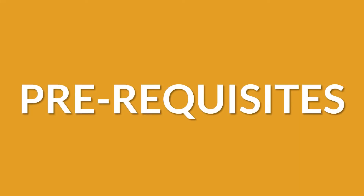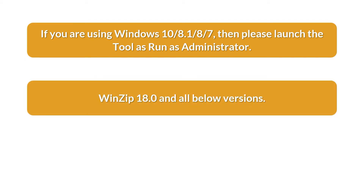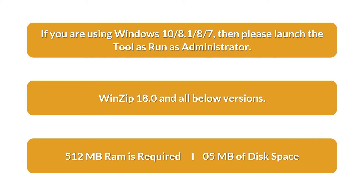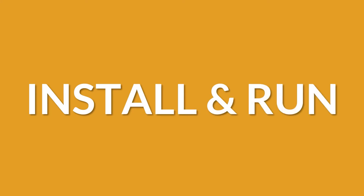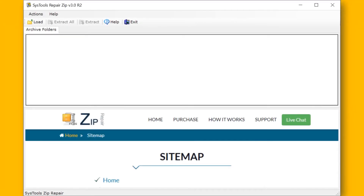Now let's check out the prerequisites before installing the software. Please launch the tool as Run as Administrator. If you are using Windows with WinZip 18.0 and all below versions, 512 MB RAM is required and 5 MB of disk space. Now let's install and run the tool to check its working process.